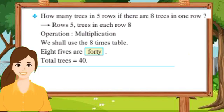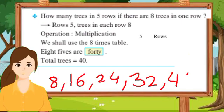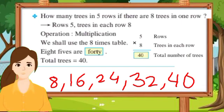We will do multiplication. We shall use the 8 times table. 5 times, that is 8 fives are: 8 ones are 8, 8 twos are 16, 8 threes are 24, 8 fours are 32, 8 fives are 40. So the total trees are 40. 5 multiplied by 8 is equal to 40. Total number of trees are 40.